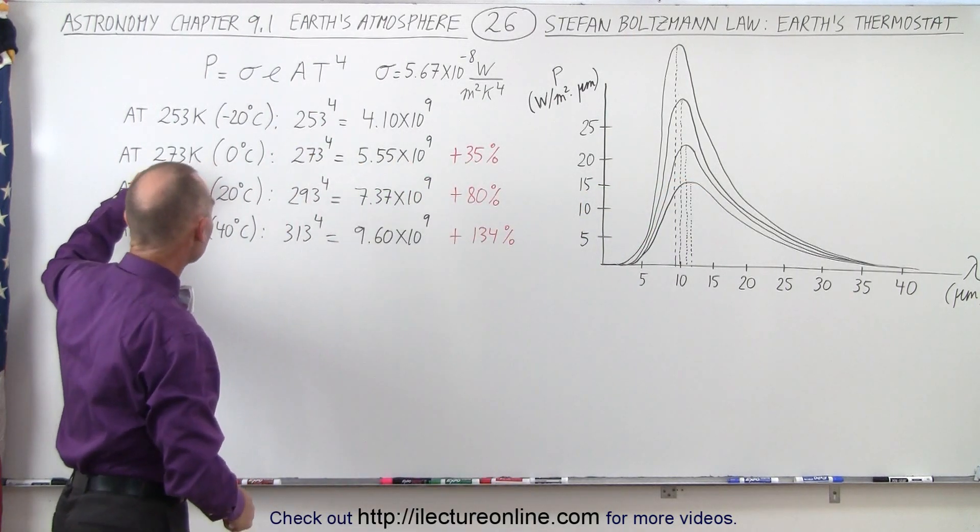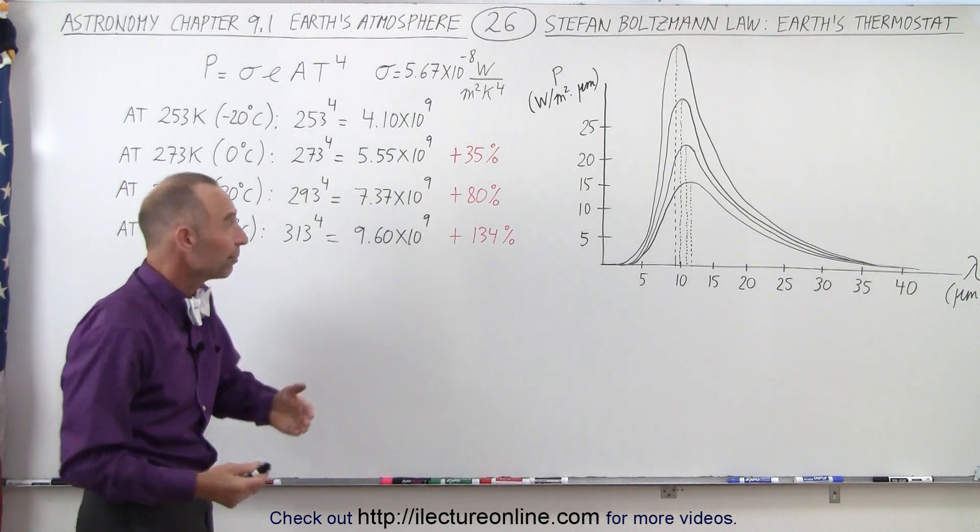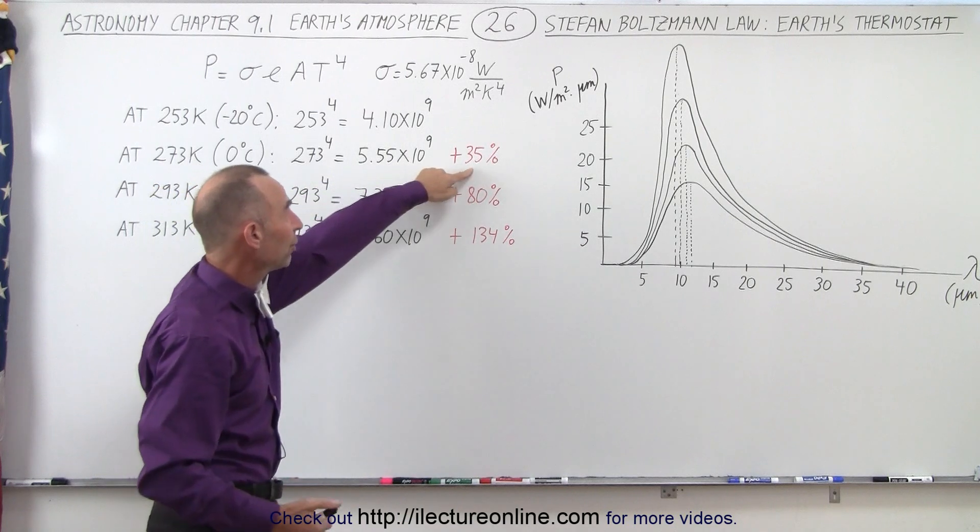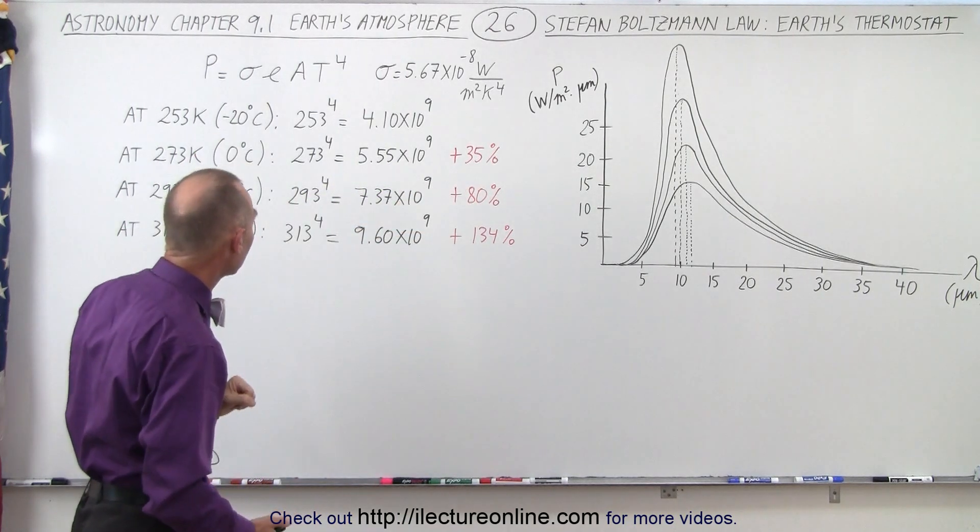Even a 20 degree Kelvin increase when it gets up to zero degrees centigrade, the freezing point of water, the amount of heat radiated from the surface increases about 35 percent over when it was minus 20.